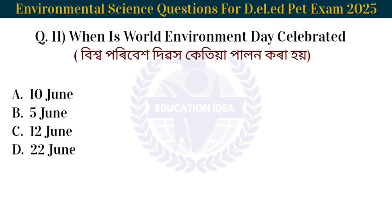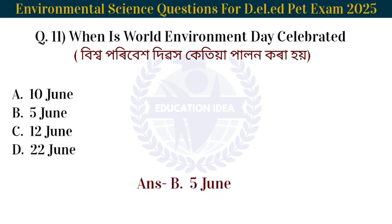Next question: When is World Environment Day celebrated? 200 bhaudya utorba kitiya palaan kora hoi. The answer is 5th June. World Environment Day is celebrated on 5th June.